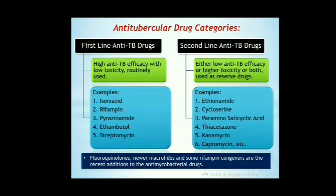Here is the classification of anti-tubercular drugs: first line and second line. First line drugs have high efficacy and low toxicity and can be used routinely. Second line drugs have low efficacy or high toxicity or both, and are used as reserve drugs or with first line drugs against drug-resistant TB. First line examples: isoniazid, rifampin, pyrazinamide, ethambutol, streptomycin. Second line examples: ethionamide, cycloserine, para-aminosalicylic acid, thiacetazone, kanamycin, capreomycin, etc.